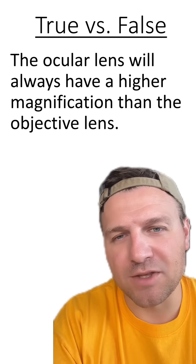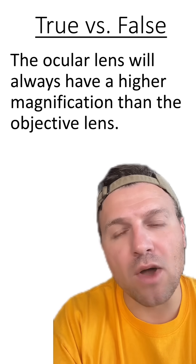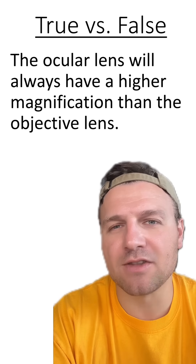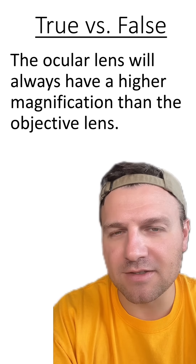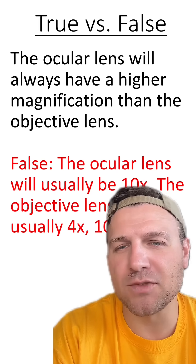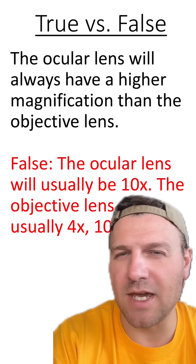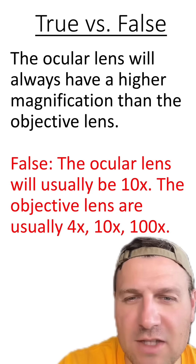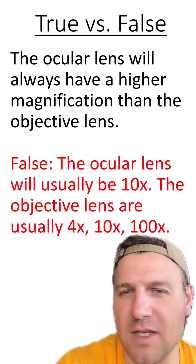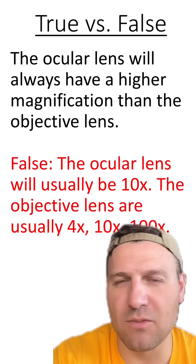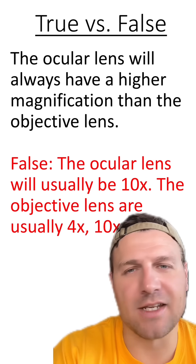Here's our next statement: the ocular lens will always have a higher magnification than the objective lens. This one's also false. The ocular lens will usually be a 10x magnification, while the objective lenses will be either 4, 10, or 100, which means it can vary.